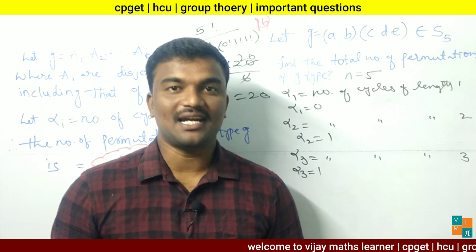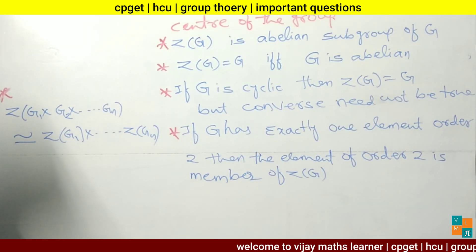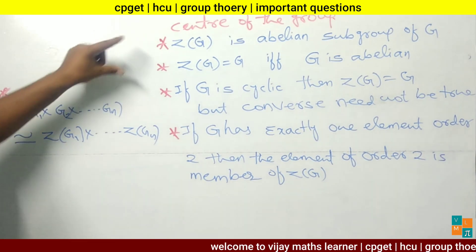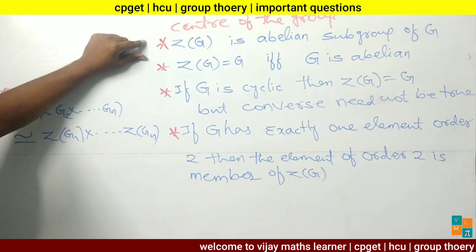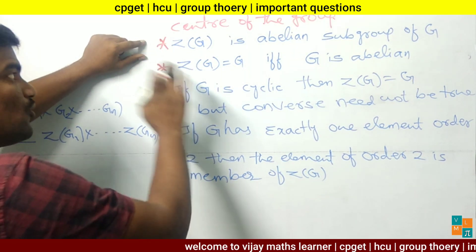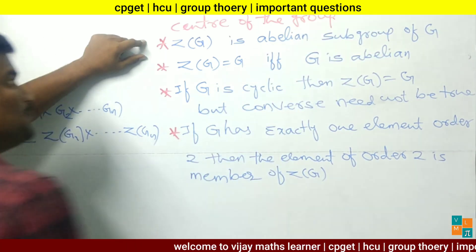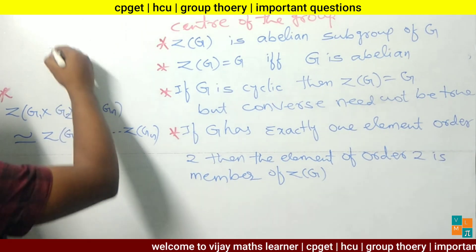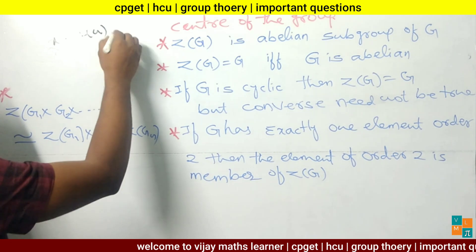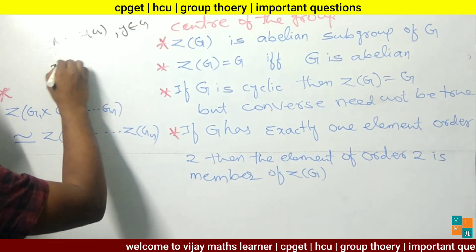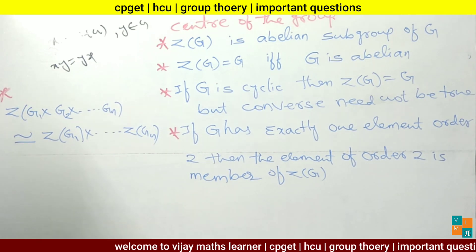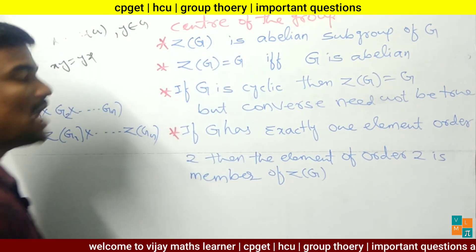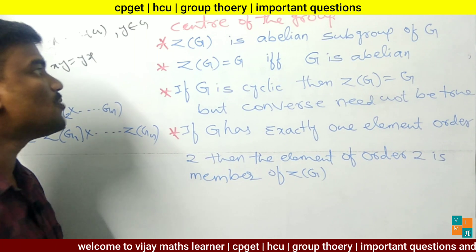Now let's see some important points about the center of the group, represented as Z(G). The center of the group is always an abelian subgroup of group G. That means if x belongs to Z(G) and y belongs to G, then always xy equals yx. So Z(G) always satisfies the abelian property.